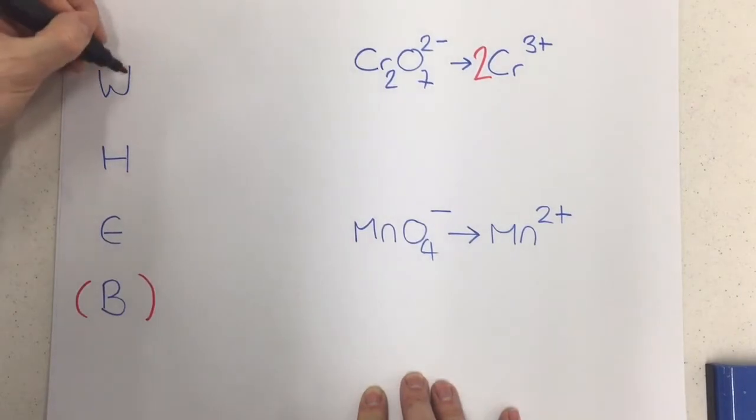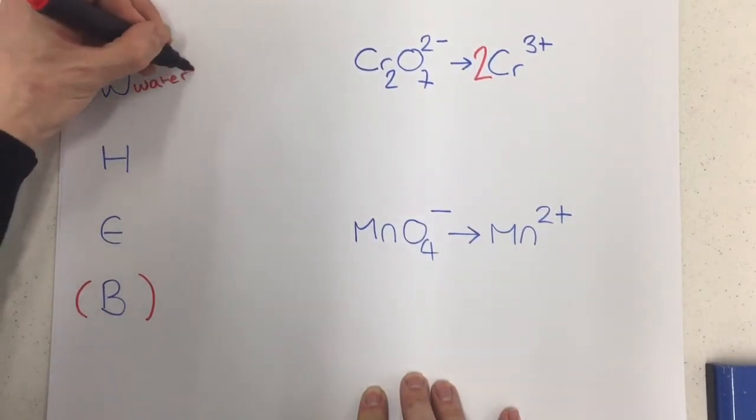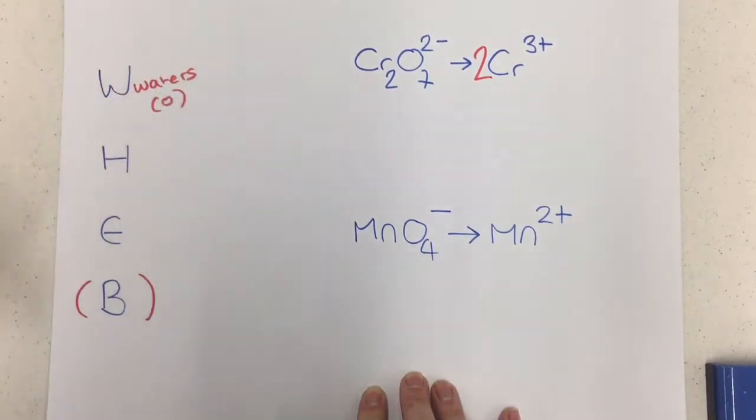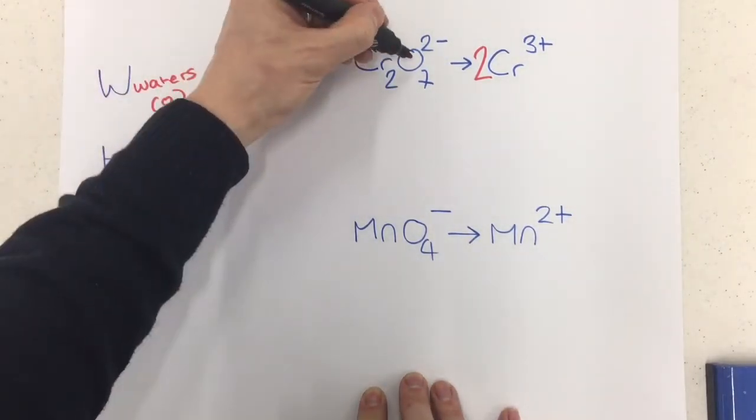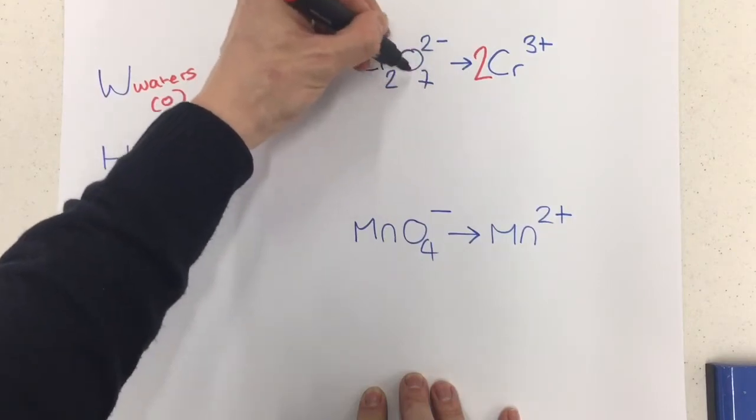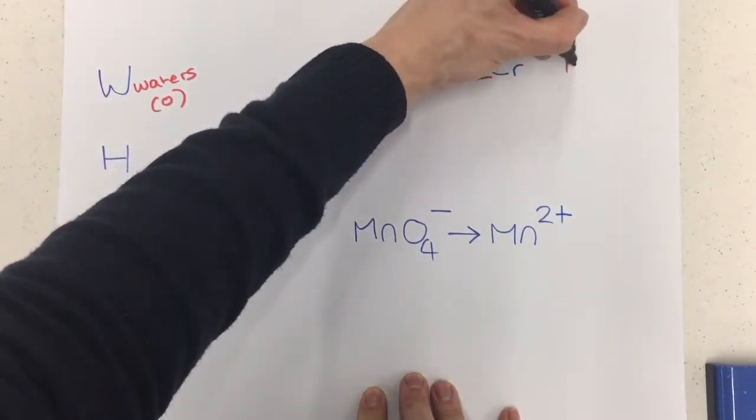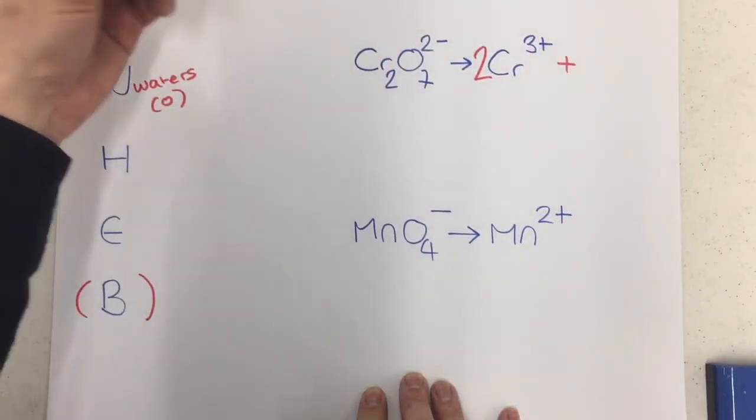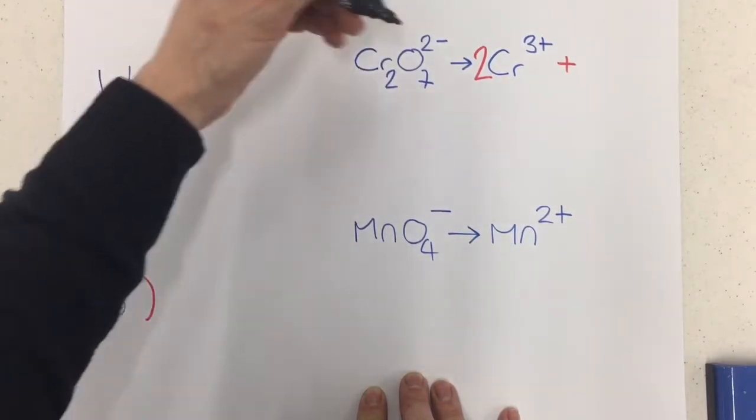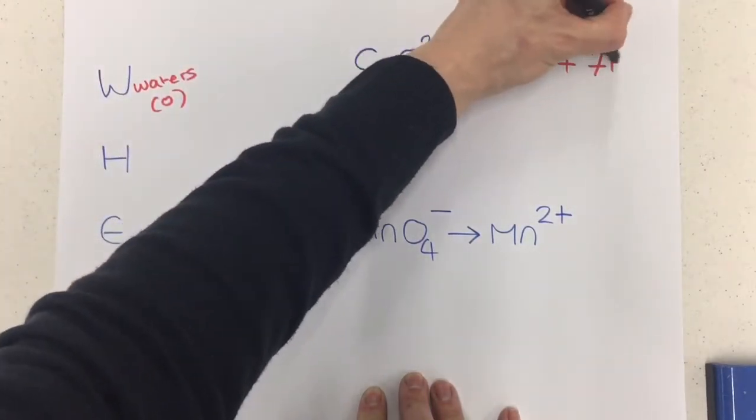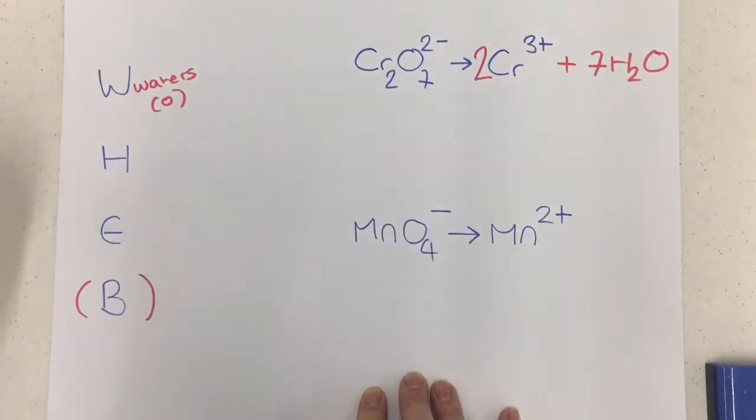So, the first one is waters and we introduce waters to balance the oxygen atoms in our equation as it stands at the moment. So I've got 7 oxygens in here and I've got nothing on this side at all, so even though it does introduce hydrogens which aren't anywhere over here, don't worry about it, we're going to introduce 7H2O over onto the right hand side.